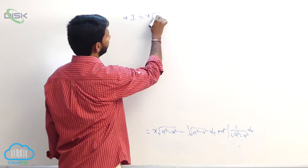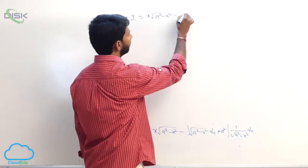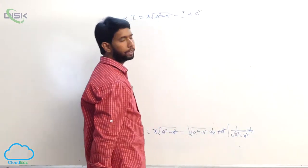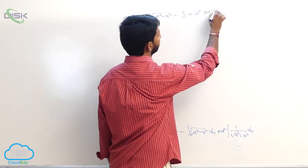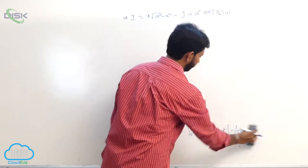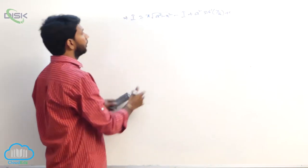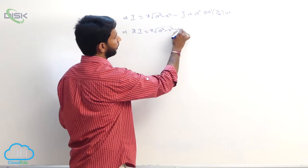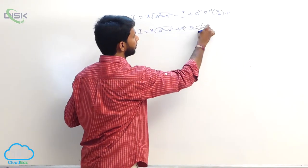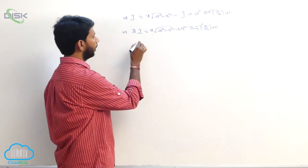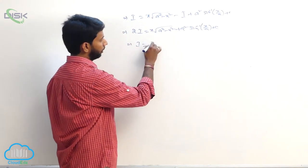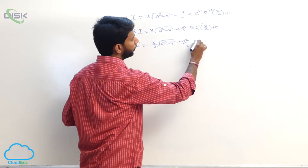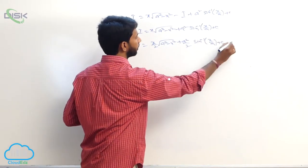So we get i is equal to x into root of a square minus x square minus i plus a square into sin inverse of x by a plus some constant. Therefore 2i is equal to x into root of a square minus x square plus a square into sin inverse of x by a plus some constant. Therefore i is equal to x by 2 into root of a square minus x square plus a square by 2 into sin inverse of x by a plus some constant.